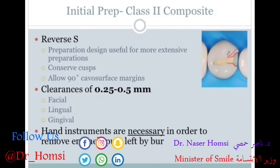The reverse-S design also allows for a 90-degree cavo-surface margin between the cavity wall and the external surface of the tooth, keeping the angle close to 90 degrees. If you just made a straight line to the outside of the tooth you might end up with an acute angle, compromising tooth structure. So the reverse-S is always a nice design to keep in mind for class 2 preparations.